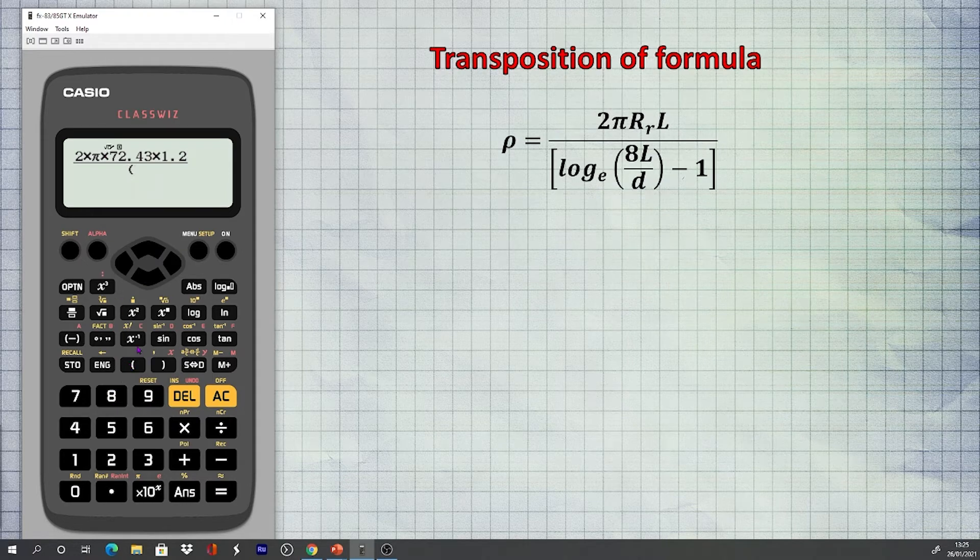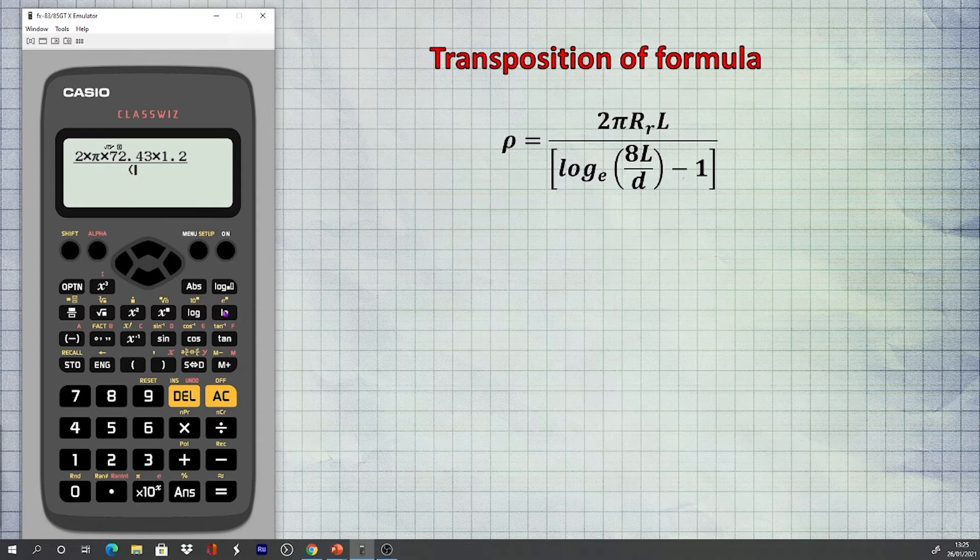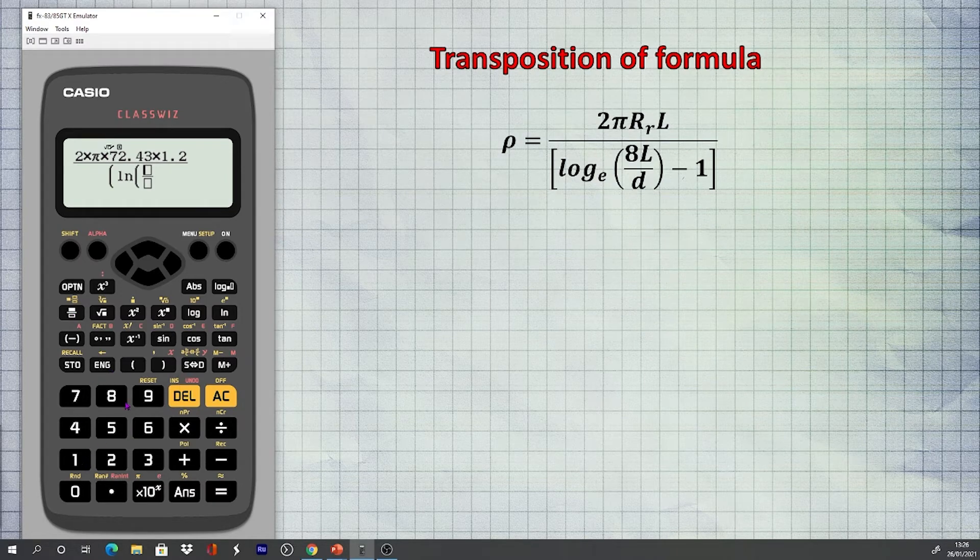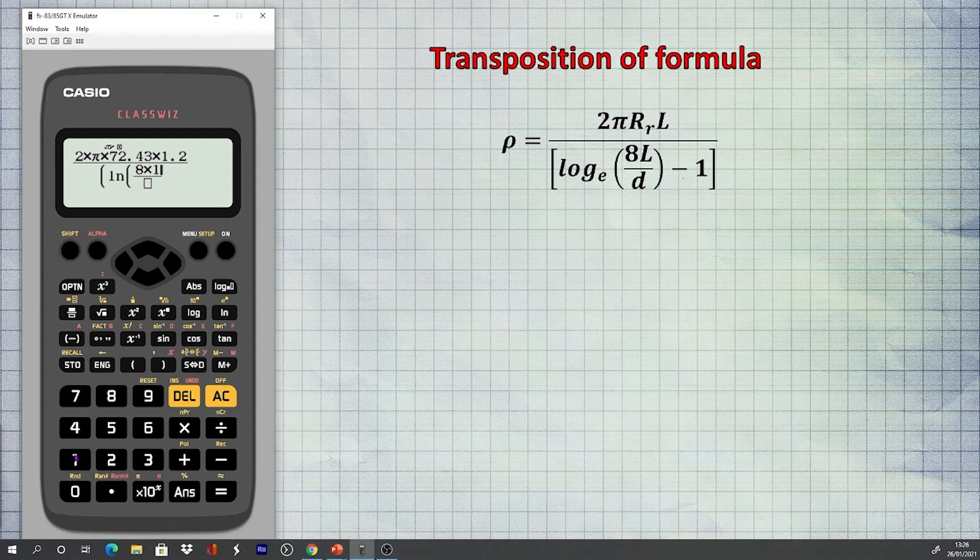If we obtain the value of resistivity in this way, we can then decide how to reduce the resistance to an acceptable value by either a greater depth of rod or employing multiple rods.